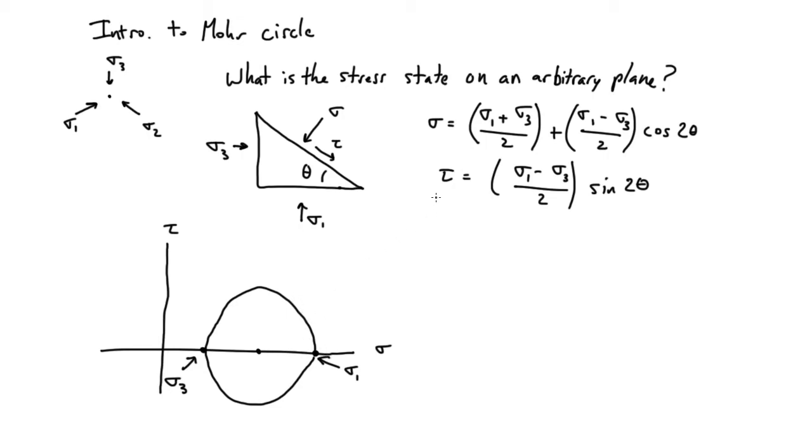Right away, even before drawing the circle, we could notice that we defined sigma 1 minus sigma 3 as something. That distance, sigma 1 minus sigma 3, is what we call the differential stress.